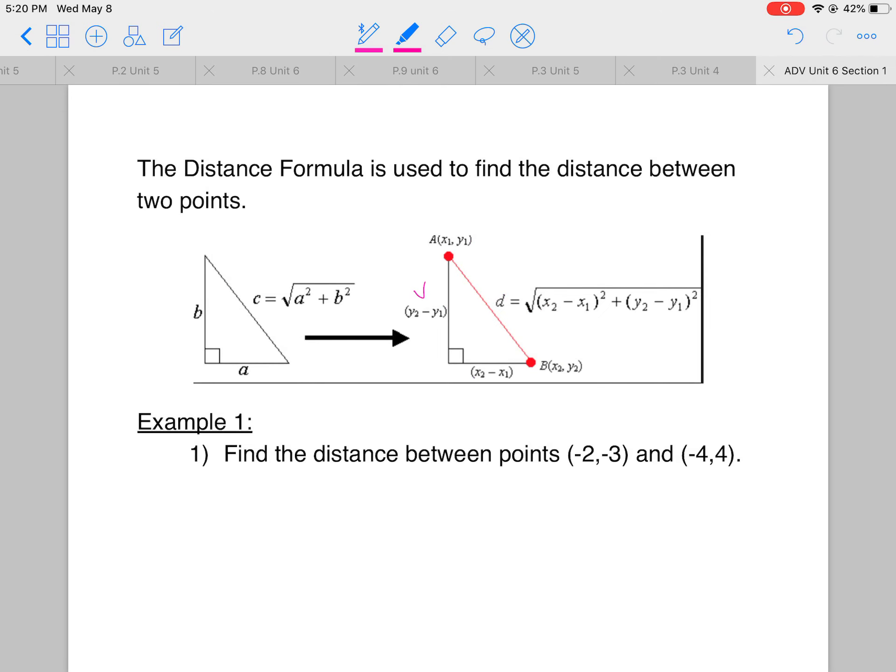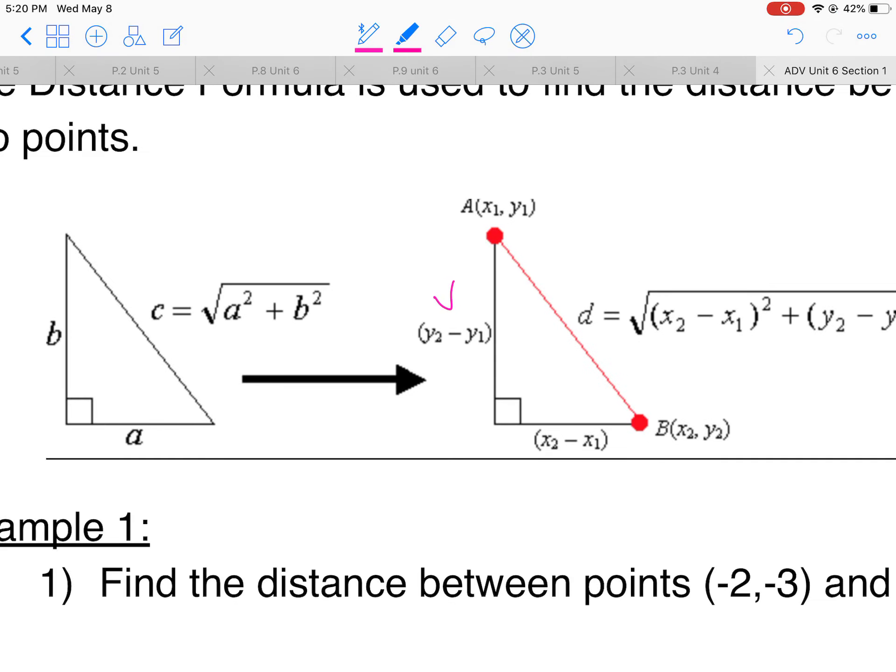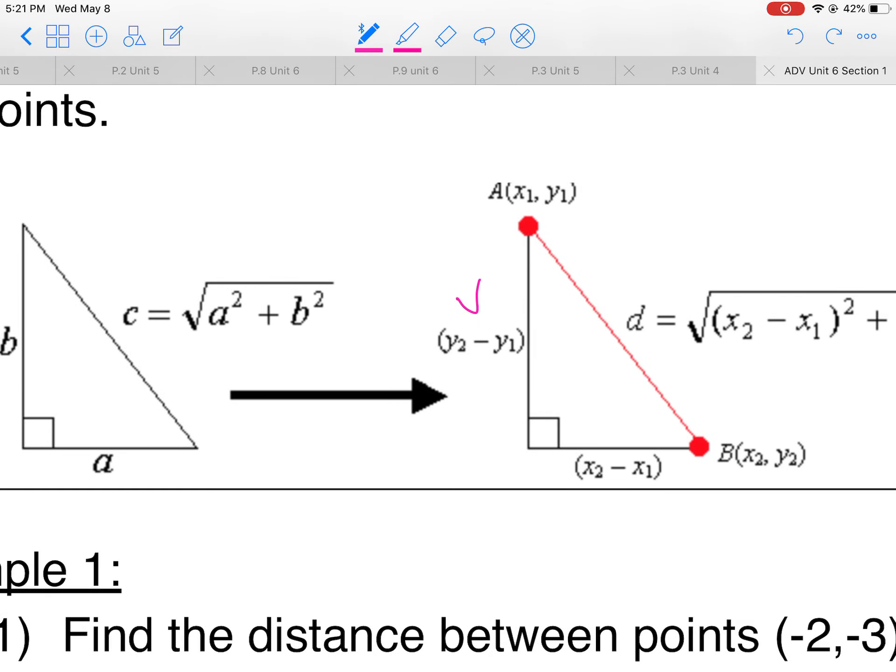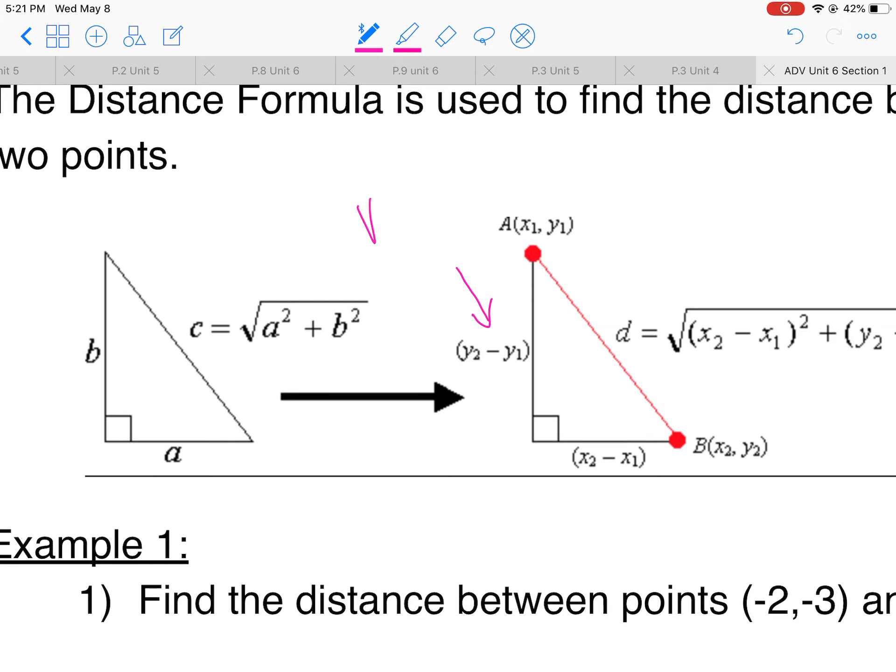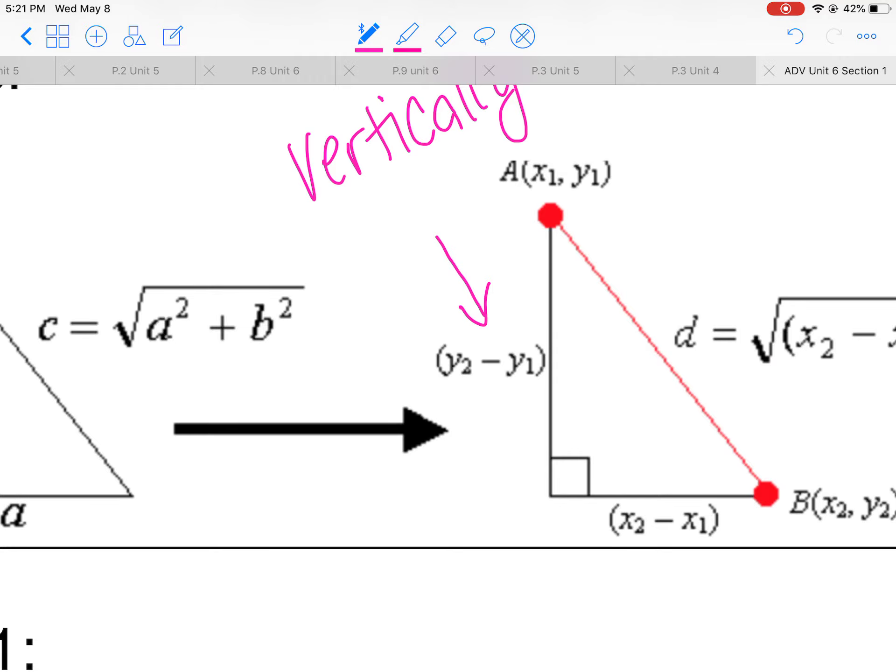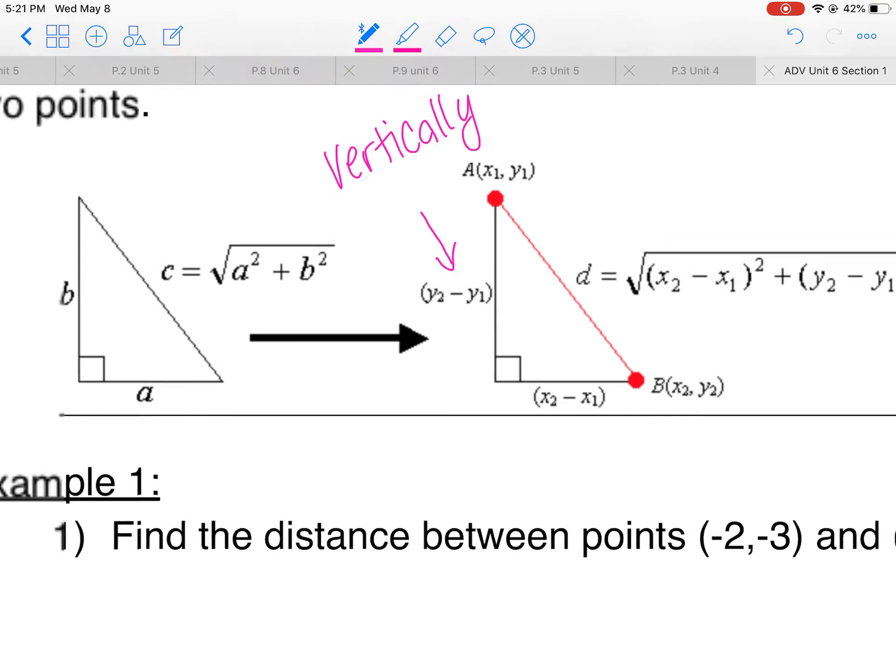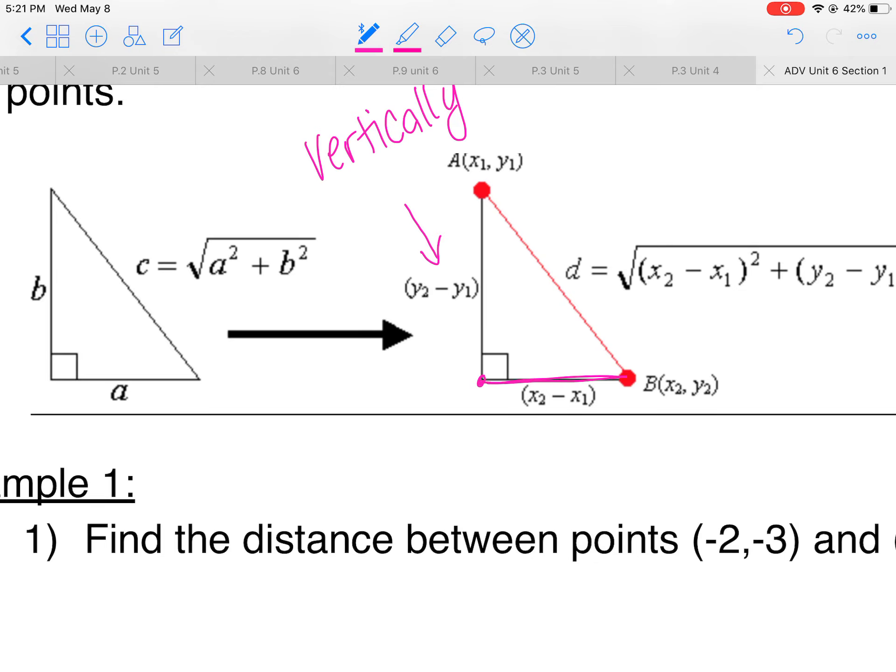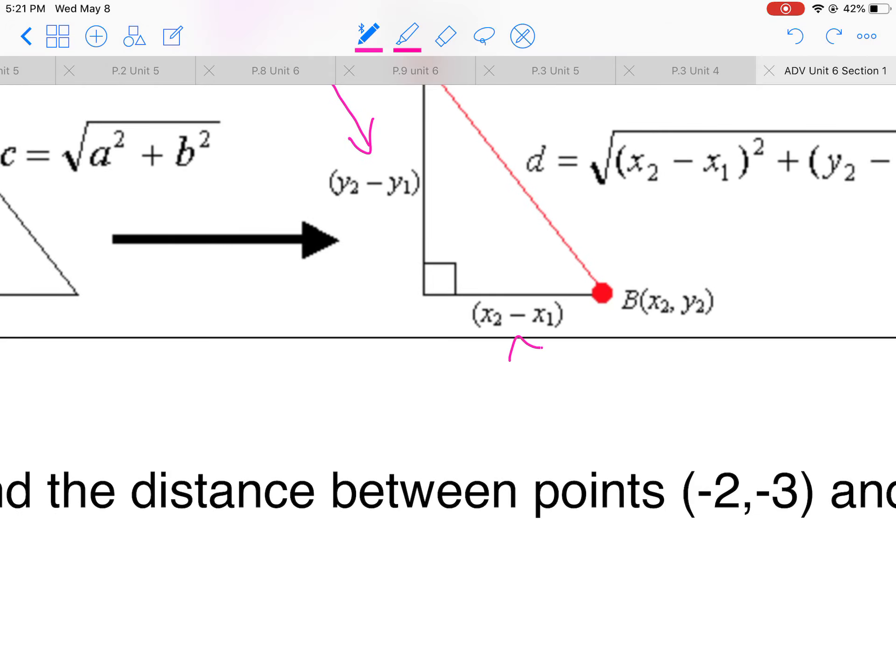The distance formula is used to find the distance between two points. Most of the time, you're going to be trying to find the hypotenuse. Now, if they want to find the distance of b here, it would be y2 minus y1 because we are traveling vertically. So you want to take all your vertical axes, which is y. And to find the distance of a right here, we would want to take all of our x values because it is horizontal.